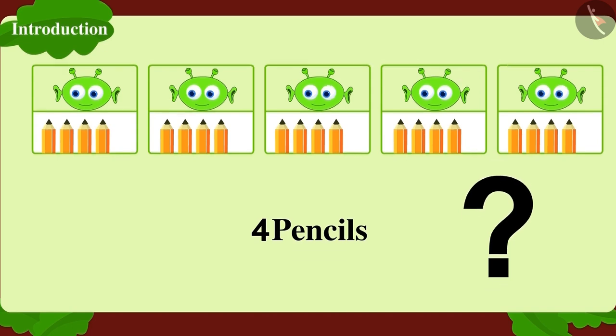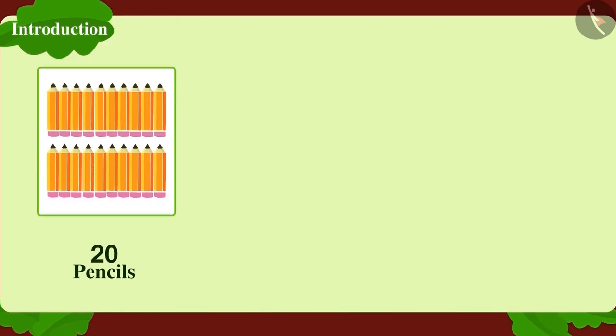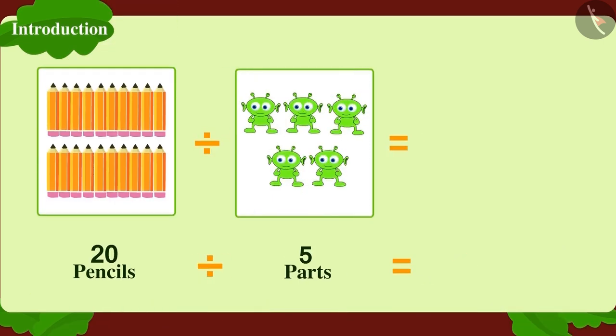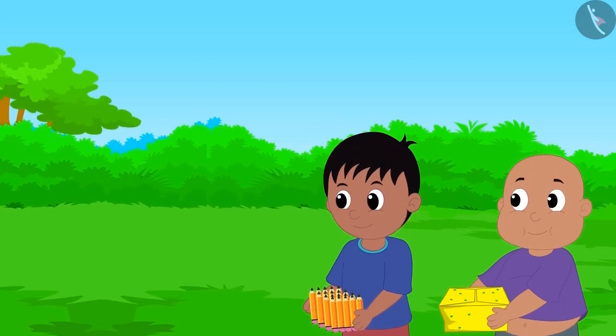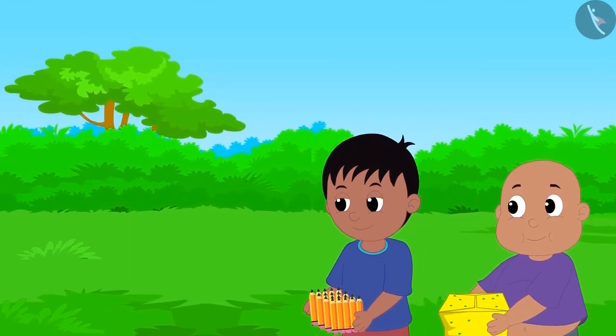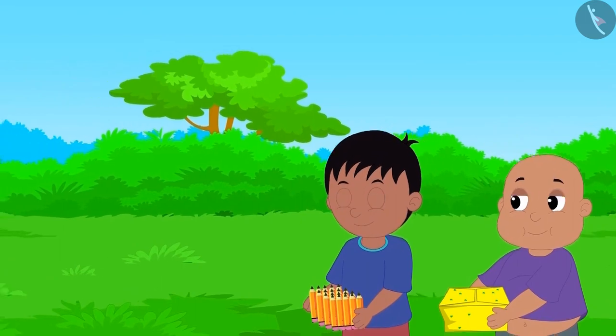How do we write this in the form of division? 20 pencils divided into five parts is four pencils per part.